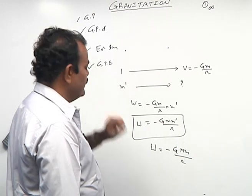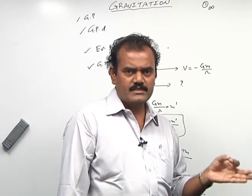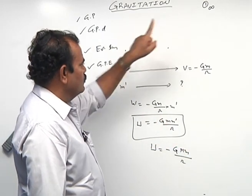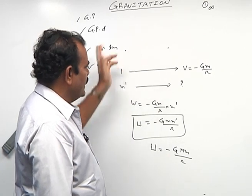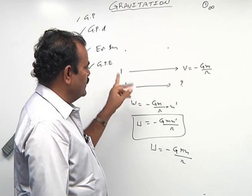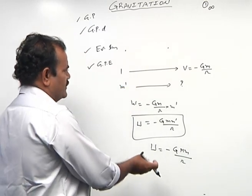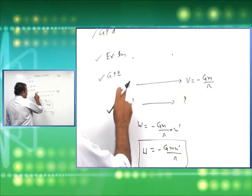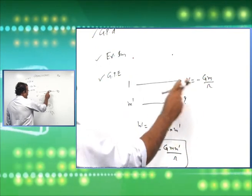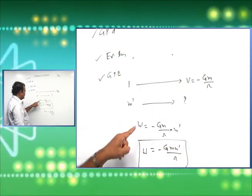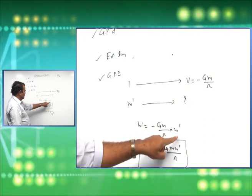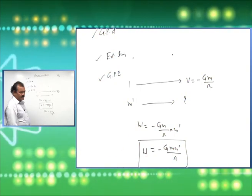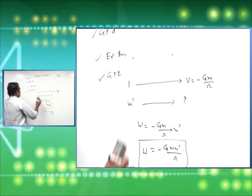Fourth, gravitational potential energy - that is important. Gravitational potential energy means it is the burden in bringing a mass of the body to a point P in the gravitational field. Already we got -GM/r as the burden for unit mass, and for m' that burden is W = -GM/r × m', which becomes gravitational potential energy = -GMm'/r.